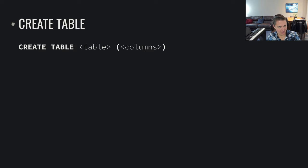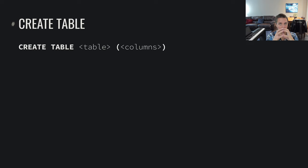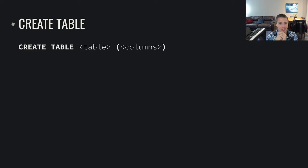The first operation that is very important to know about is the Create Table operation. SQL operates off of a paradigm where you have databases, and within those databases you have tables. Within those tables you have rows and columns. You can think of it like a spreadsheet application with pages, rows, and columns holding data. The first thing we want to do is create a table to store data.